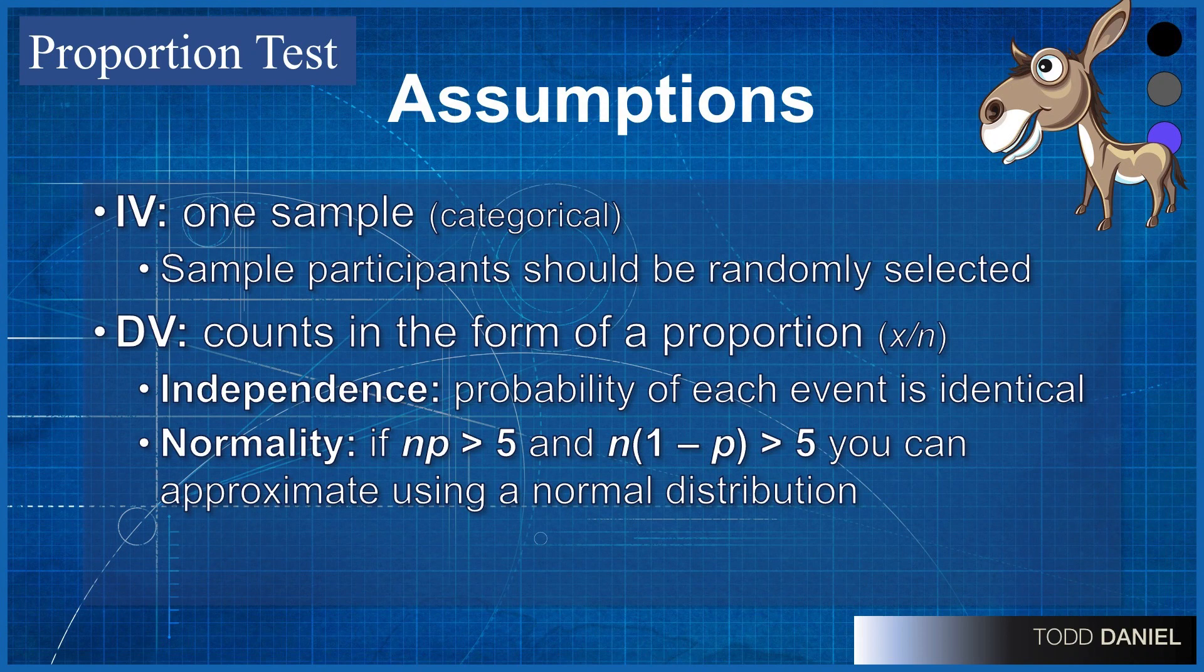Assumptions of independence still hold. We want to make sure that the responses that we're getting from one particular person or individual or polar bear are not influenced by others in the sample. And we meet the assumption for normality if the following two conditions are true: if n times p is greater than 5 and n times (1 minus p) is greater than 5. These are the settings for a proportion test.